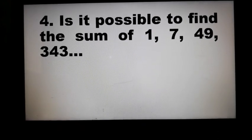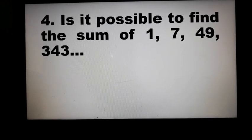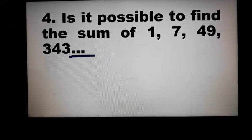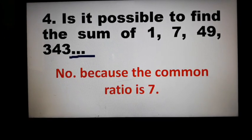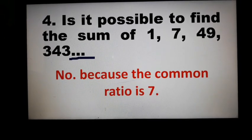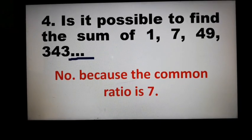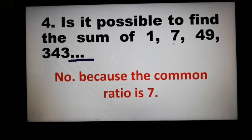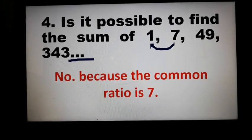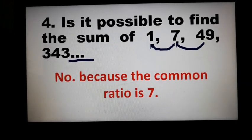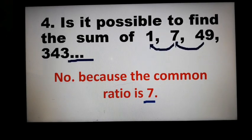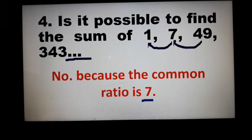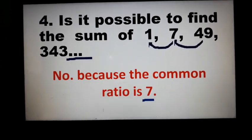Example 4: Is it possible to find the sum of 1, 7, 49, 343, and so on? No, because the common ratio is 7. How do we get the common ratio of 7? 7 divided by 1 equals 7, and 49 divided by 7 equals 7. So the common ratio is very large, and it's not possible to find the sum of this geometric sequence.